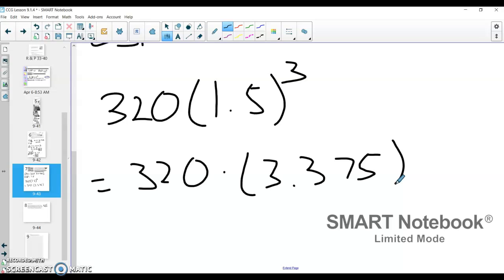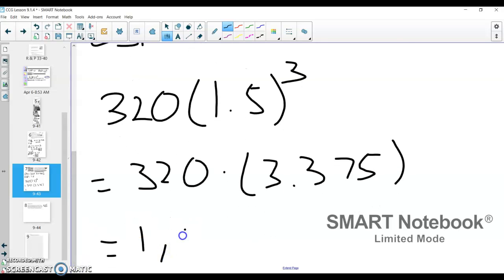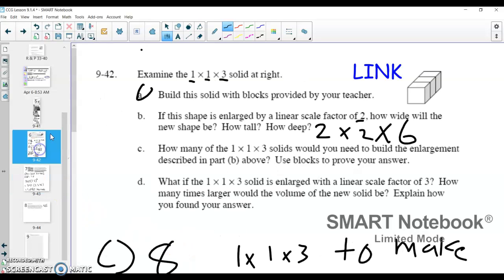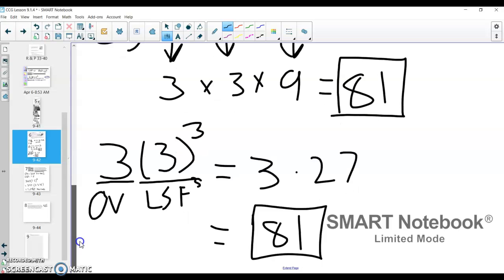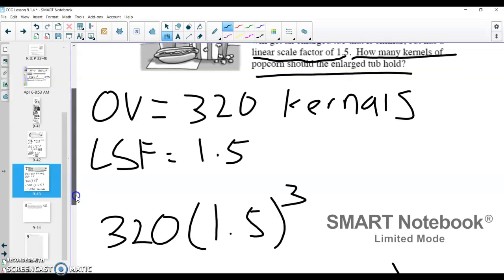All right, you take that 3.375, multiply it by 320, and your new enlarged bucket or tub of popcorn can hold 1,080 kernels. And that's just again, that's using that second form here. That's using this idea that you can take original volume, multiply it by linear scale factor cubed, and you get your new volume. That's what we're doing here. It's just that our volume is in terms of kernels this time around.